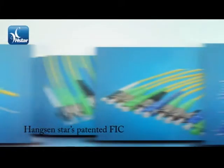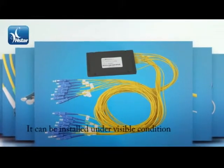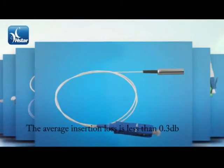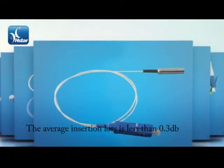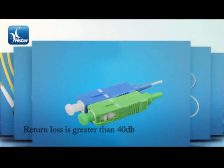HansenStar's patented FIC has a red light window ensuring 100% connectivity. It can be installed under visible condition. The average insertion loss is less than 0.3 dB. Return loss is greater than 40 dB.